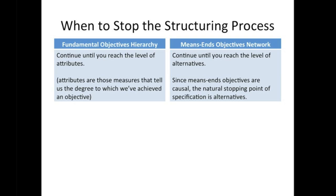With a means-ends objectives network, you continue structuring your means-ends objectives until you reach the level of alternatives. Recall that a means-objectives network is not hierarchical — the lower means objectives are those things that influence the higher-level ones. So the natural stopping point for this type of structuring is when you reach the point of alternative ways of achieving your objectives.